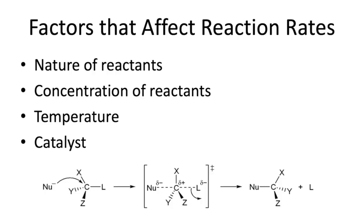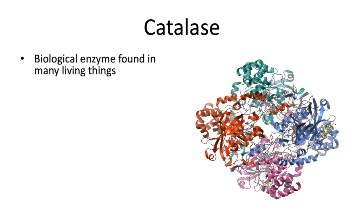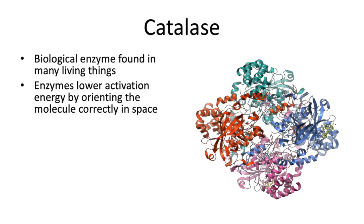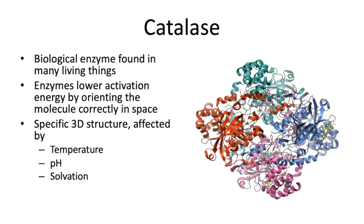A catalyst is a substance that causes the reaction to proceed more quickly. The way a catalyst works is by orienting the molecules correctly, which lowers the activation energy. In biology, we have enzymes that act as biological catalysts — the enzyme you'll use in this experiment is called catalase, and it's found in many living things including cows, humans, potatoes, and yeast. Its purpose is to break down peroxides because they can damage your systems. Like all enzymes, it lowers the activation energy by orienting molecules correctly in space. Because enzymes are made of protein, they have a specific three-dimensional structure that can be affected by temperature, pH, and solvation.